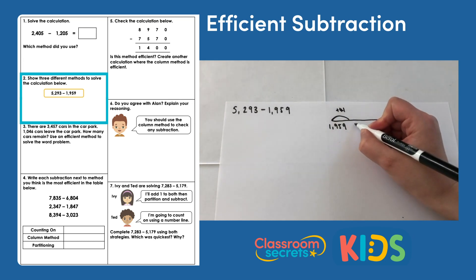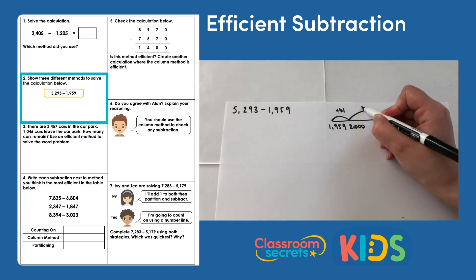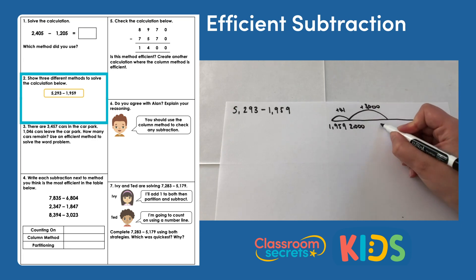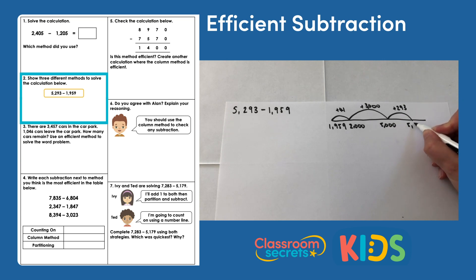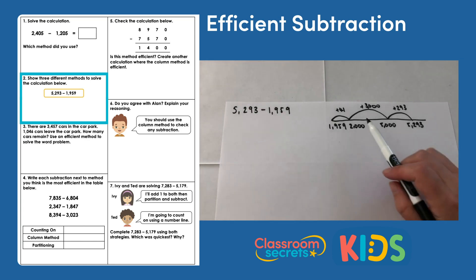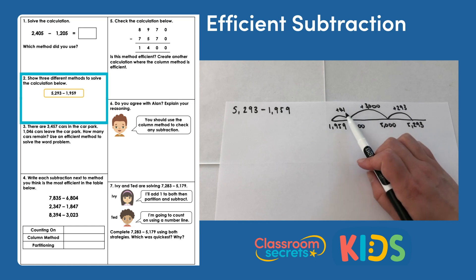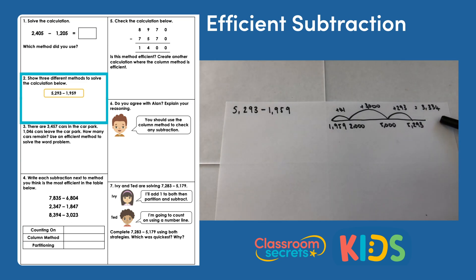I can then do a bigger jump and add 3,000, which takes me to 5,000. Then the final jump is to add 293 to reach the target of 5,293. To find our answer, we add together what we jumped by: 41 plus 3,000 plus 293, which gives us three thousand three hundred and thirty-four. That is the answer shown by counting on a number line.